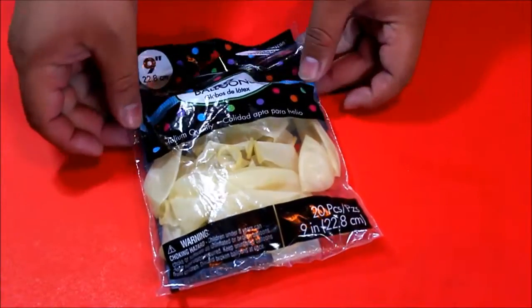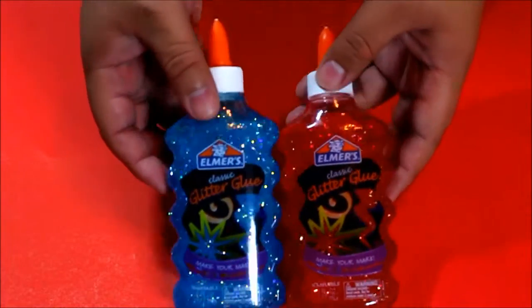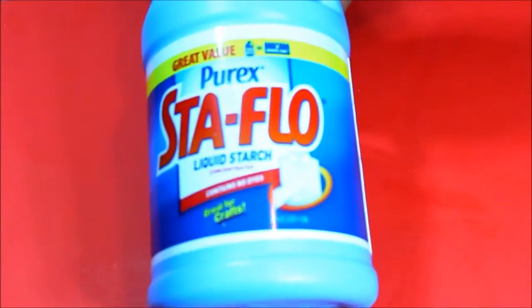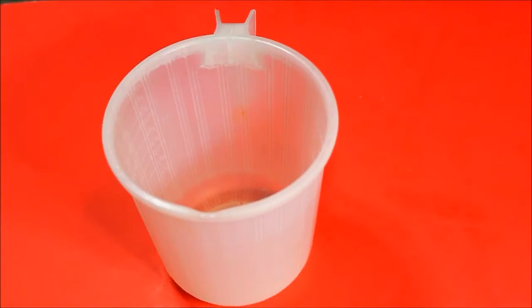So for this DIY you are going to need some transparent balloons, some red and blue glitter glue, and you'll also need some liquid starch. We're just going to go ahead and start off by making the slime.